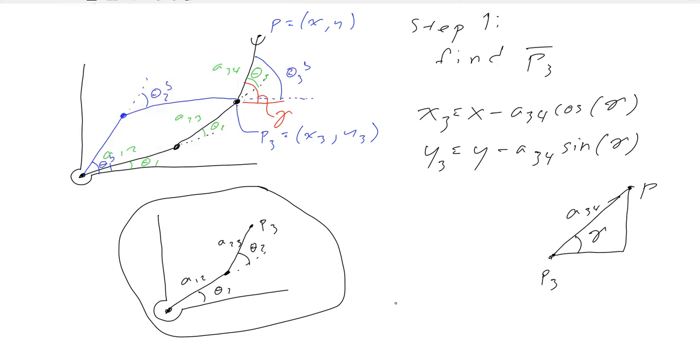So to solve for now theta1 A and B, and theta2, I'm sorry, theta3 A and B, we would use this equation, that the definition of gamma. Gamma is theta1 plus theta2 plus theta3.